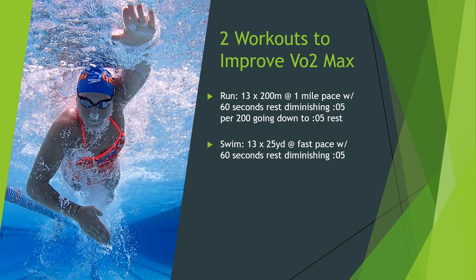To improve VO2max, here are two workouts. You do 13 intervals — if you're running, that might be 200 meters; if you're swimming, that might be 25 yards. For more advanced athletes, you can go towards 400 or 800 meters for the run and 50 to 100 yards for the swim, adding distance to make it more difficult. The intervals are at fast paces — the run is at your one-mile pace, the swim at your 200 or 400 pace. You start with 60 seconds of rest.